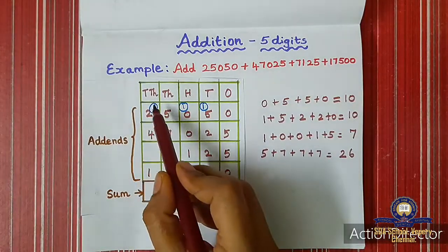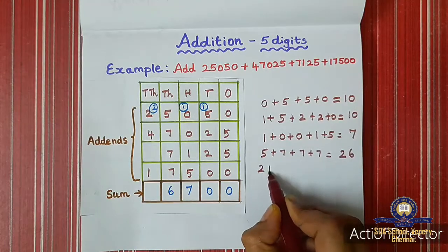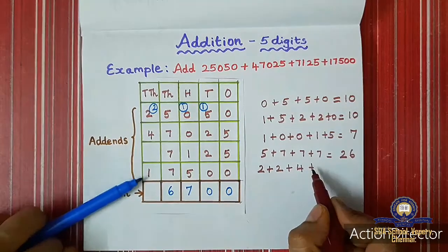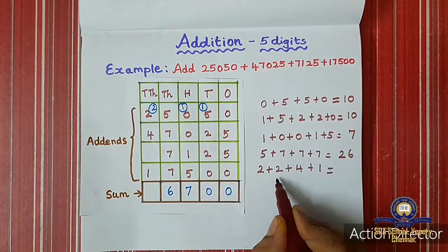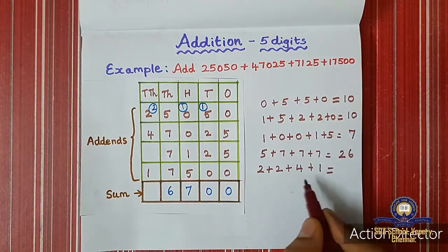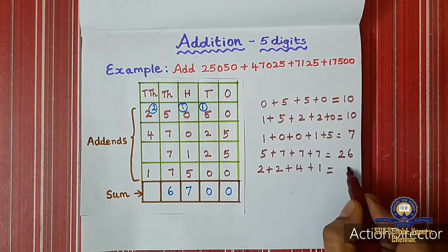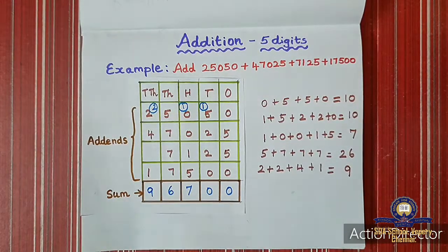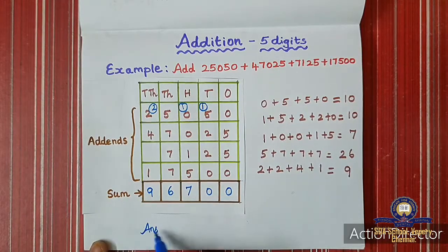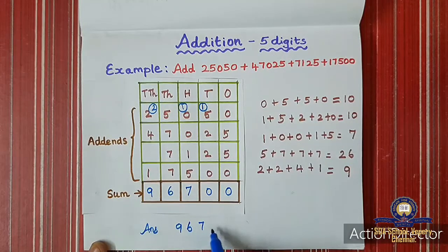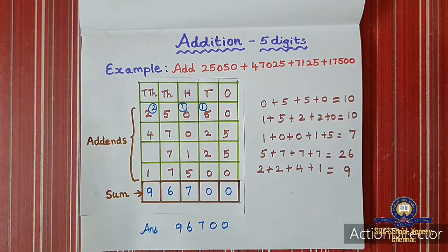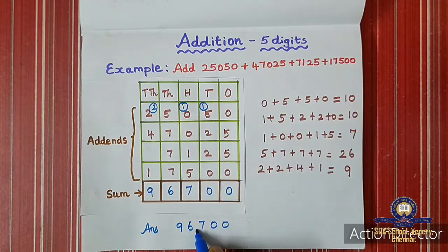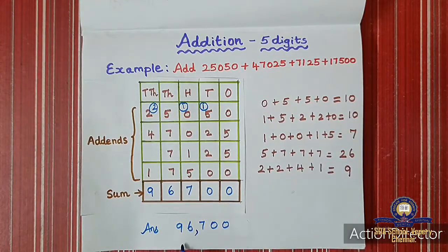Now we add the ten-thousands place: carry 2, plus 2 plus 4 — the fourth number has no ten-thousands digit — plus 1. So 2 plus 2 is 4, plus 4 is 8, plus 1 is 9. We write 9 in the ten-thousands place. Now we put the comma: the ones group is ones, tens, hundreds, so after that we put a comma. The answer is 96,700.